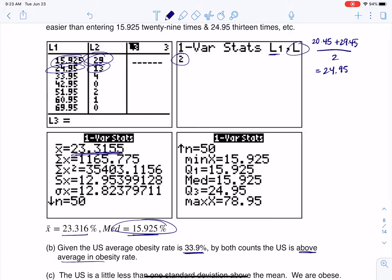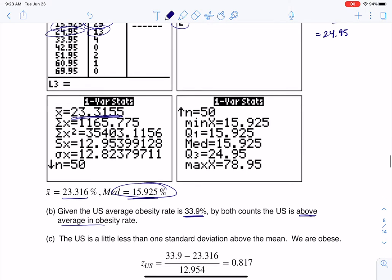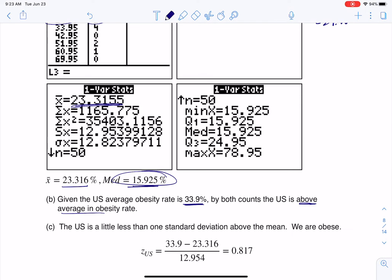And then in terms of Part C, where it says, how does it compare to other countries, well, let's go ahead and figure out what our Z-score is. Z-scores allow us to take data from different countries and put them on a common scale, so I've got my value for the U.S., I've got the world's average, and the world's standard deviation. And just to remind you, for standard deviation, I always use the S value, not the sigma value.